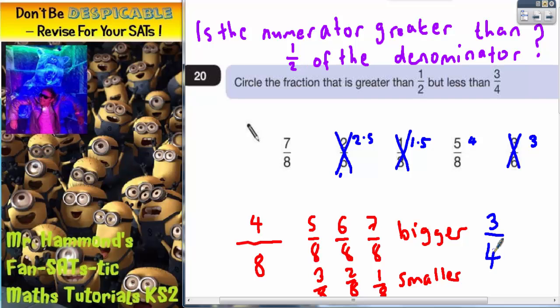So if I'm talking about three quarters, to get an equivalent fraction, if I double both of those, I will get six eighths. So three quarters is equivalent to six eighths. Now I've only got seven eighths and five eighths to choose from. And the one that I need to circle has to be less than three quarters.